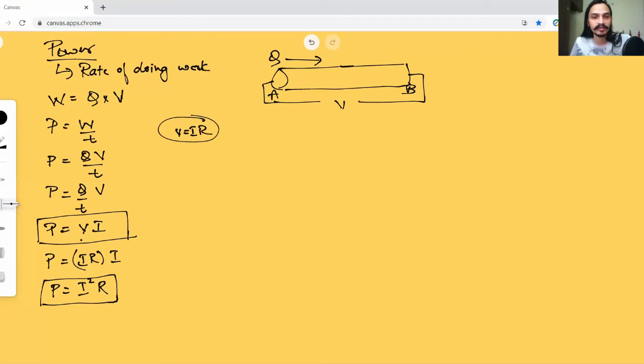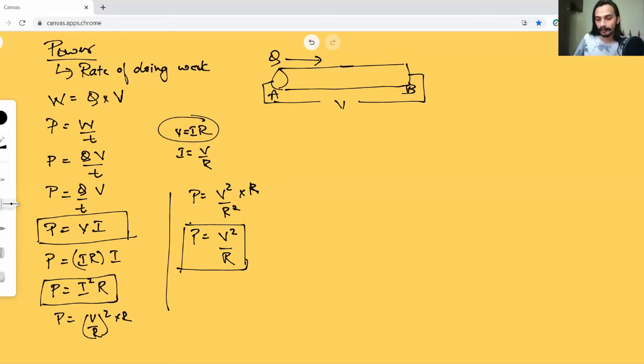Now, similarly, what I can do, I substituted V here. I can also substitute I. So, what I can do, if V equals to IR, I equals to V divided by R. Correct. I'll send that across. So, I can say P equals to V by R whole square into R. So, I'll say P equals to V square by R square into R. So, this R and this square should get cancelled. So, I can say P equals to V square divided by R something like this. So, this is another formula that can be used when it comes to power.